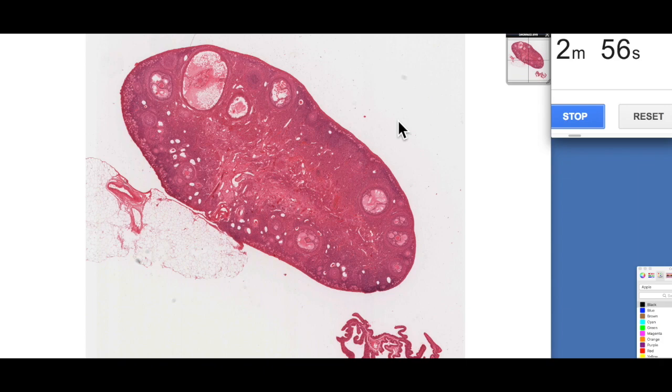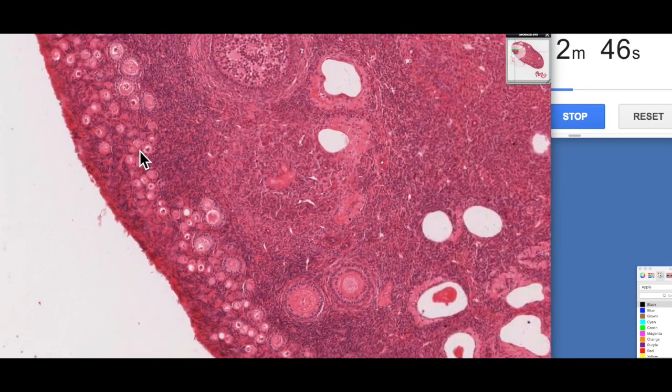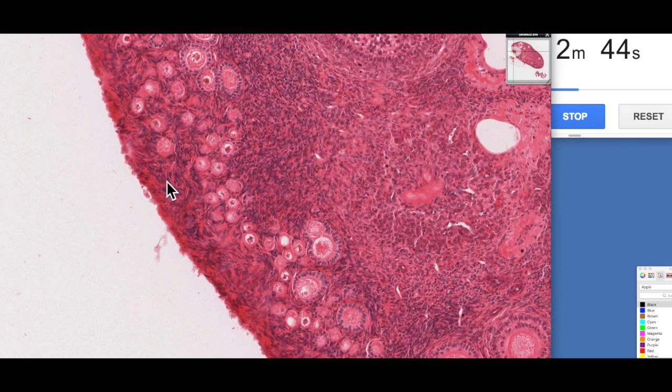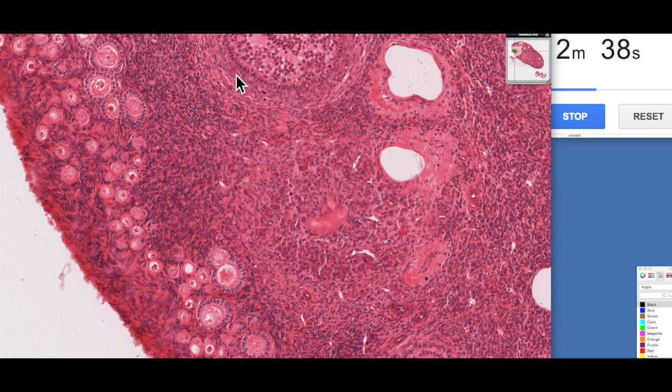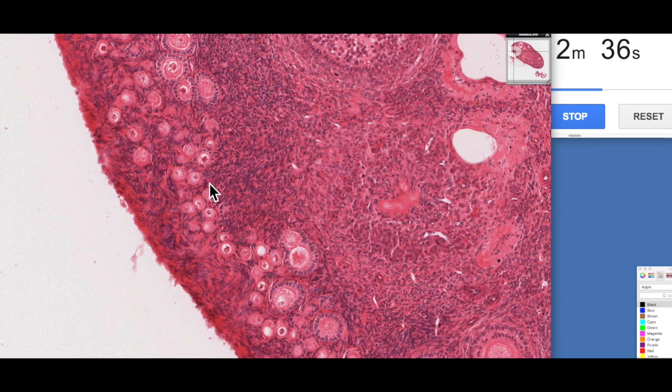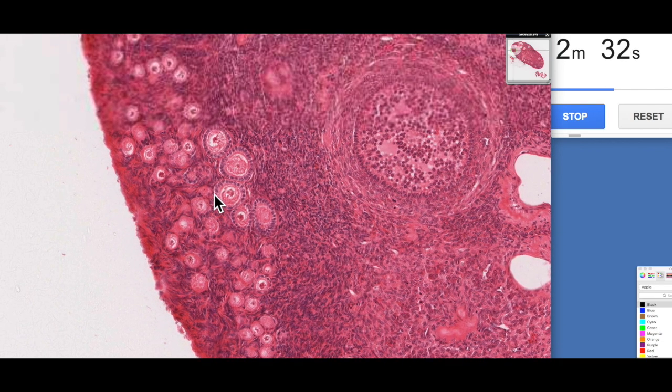So the store of follicles within a woman's ovary, immediately after she's born, are a type of follicle known as the primordial follicle. These are the follicles which are stored particularly on the outer part of the cortex. So this is the ovarian cortex where we find the follicles at various stages of development. And so these are all primordial follicles.